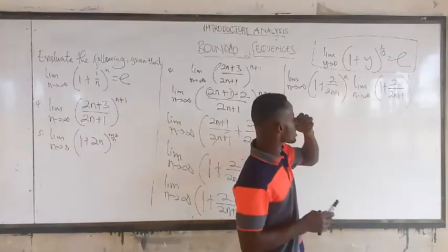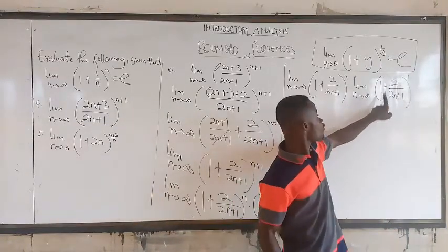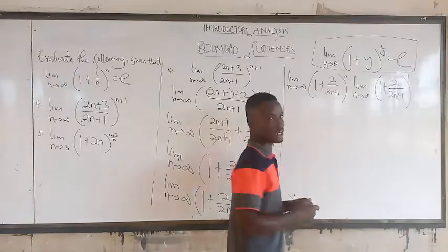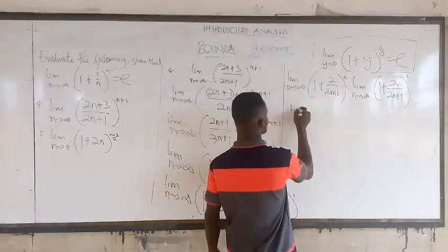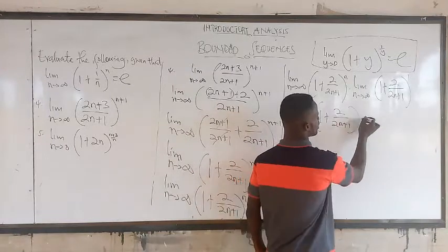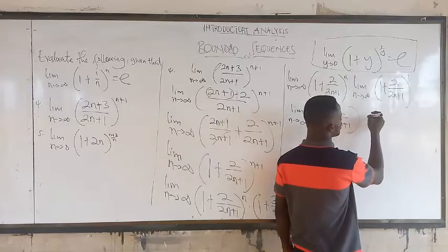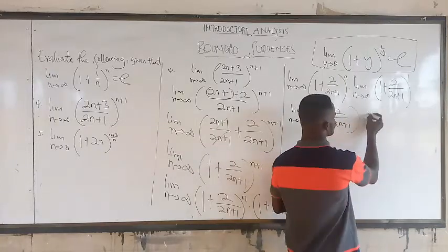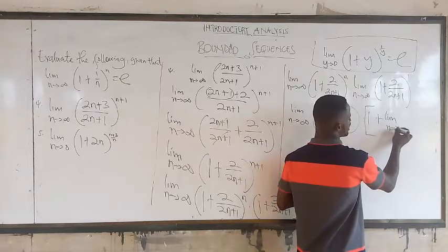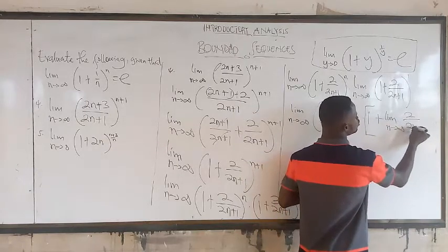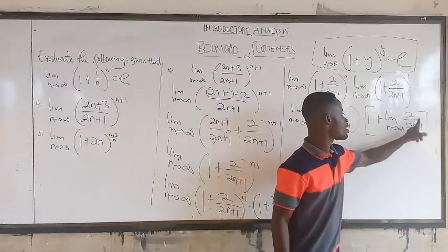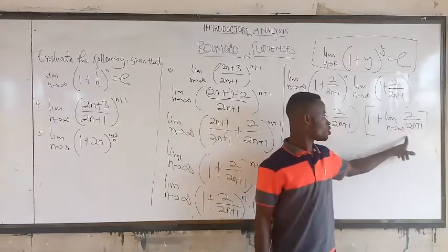Now here, straightforward: the limit of the second factor — we can take the limit of 1 and get 1, plus the limit of 2/(2n+1) as n approaches infinity. The limit of a constant is the constant, so 1 stays as 1 plus the limit of 2/(2n+1) as n approaches infinity. This term goes to 0.